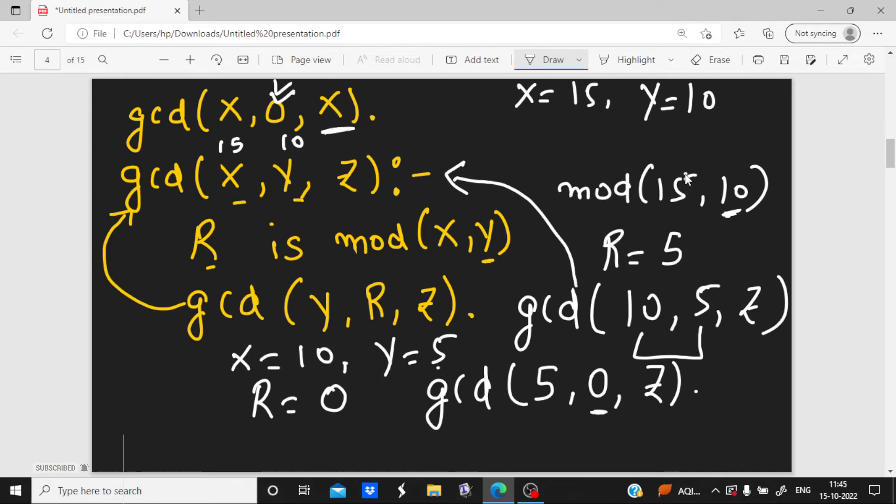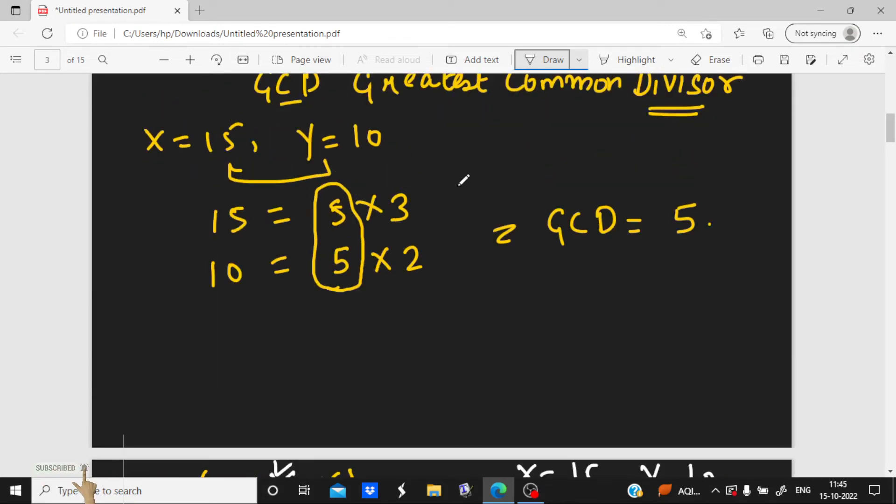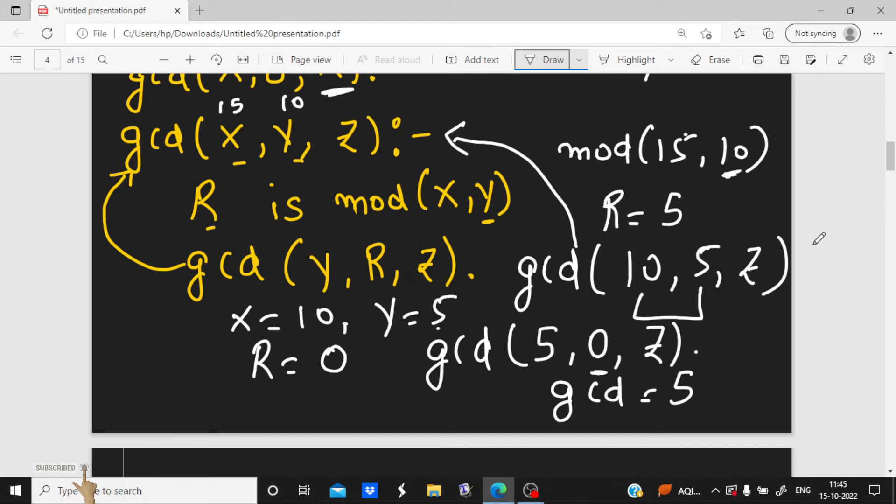So here y is 0. So our result will be 5. That means gcd turns out 5. As in the previous case you see here, this example, when we are taking the gcd that is also 5, and with the help of this program also gcd is 5. So this is the implementation part of the gcd.